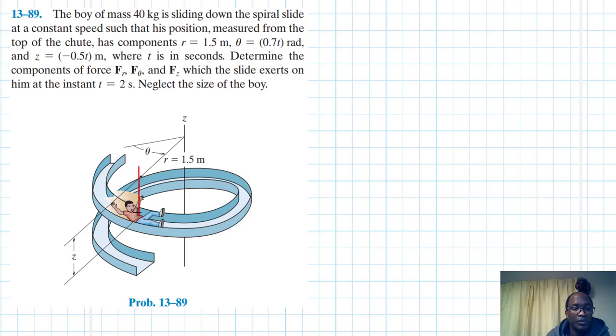So the boy has the weight W. And then we are looking for the reaction force that the slide exerts on the boy. We'll have a reaction force in this direction. We are choosing the positive directions. We'll have the reaction force in this direction and as well as the reaction force in this direction.